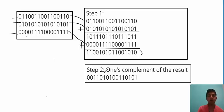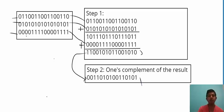In the second step, the one's complement of this result is taken. So this result is taken and the one's complement is computed — this particular value is known as the checksum.